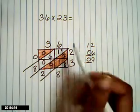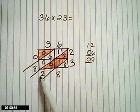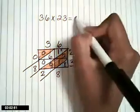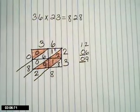You can write it if you like. So we now have our answer. 36 times 23 is 828. That's easy enough. Now I'm going to show you how to do the problem with a 3-digit number at the top.